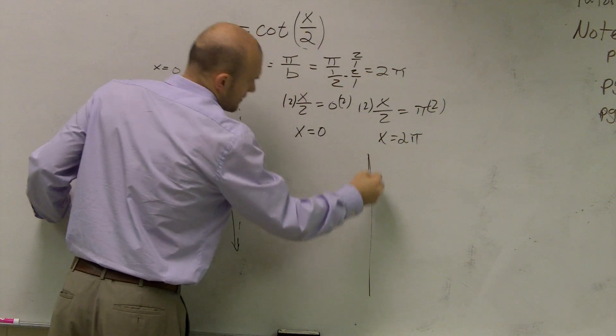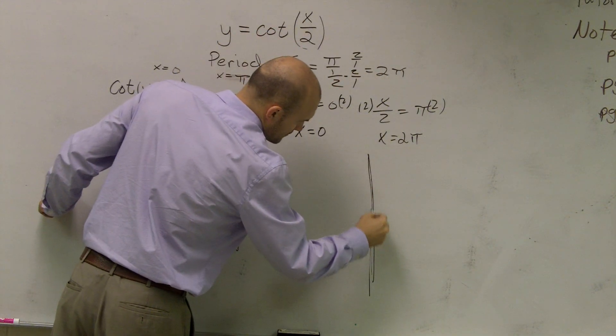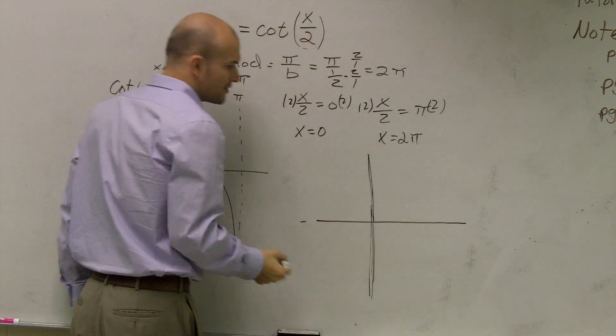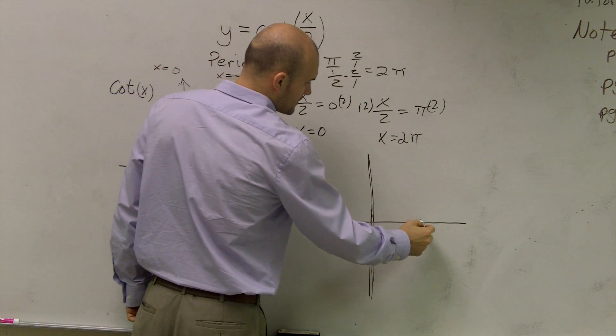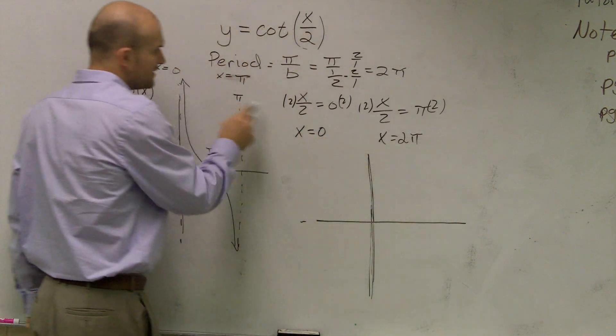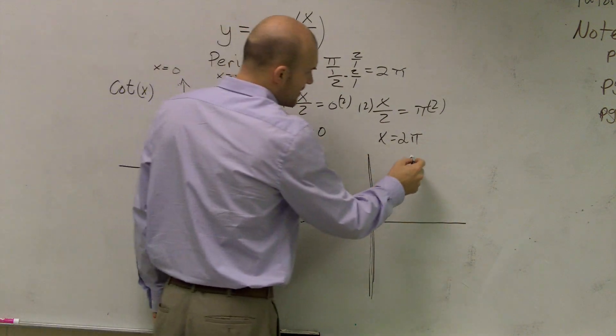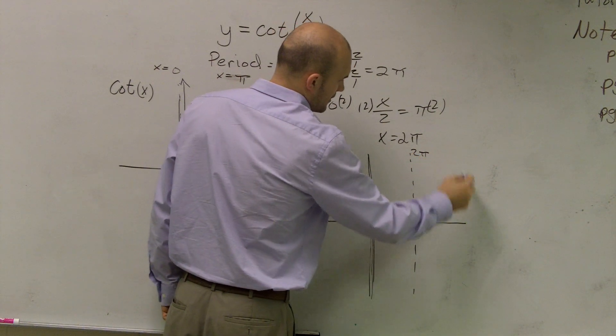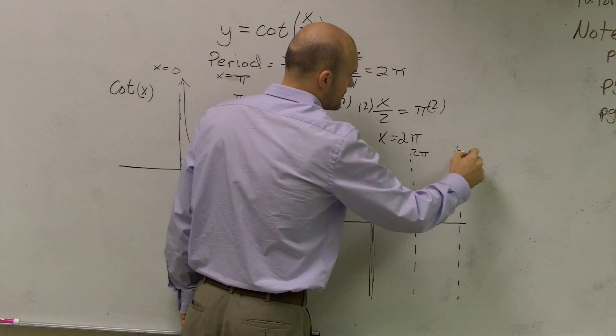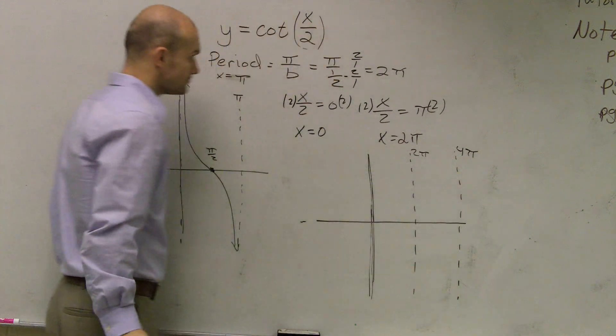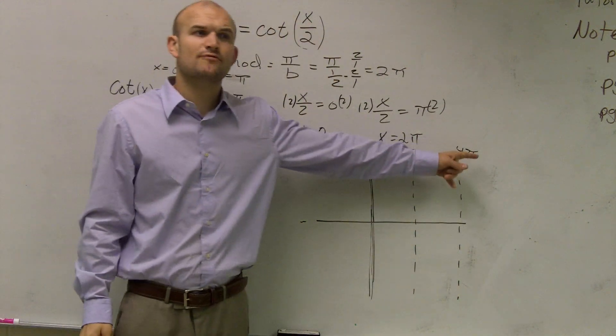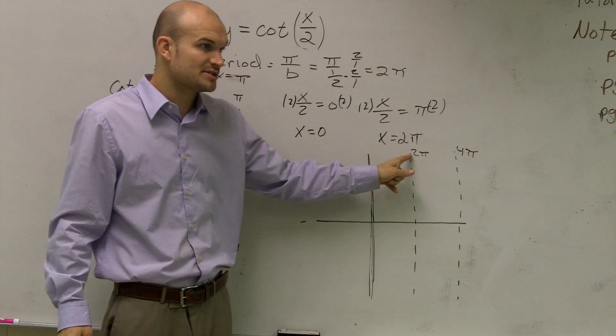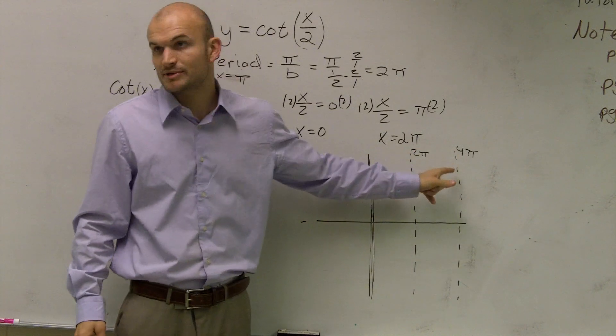So my graph now goes between, instead of having an asymptote at π, now has an asymptote at 2π. And so if I was going to graph two periods, this would be at 4π. Well, why do I know the next one's at 4π? Because the period is 2π. So the distance from here to here should be 2π. The distance from here to here should be 2π.